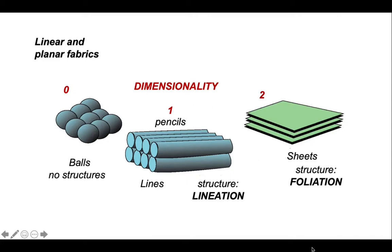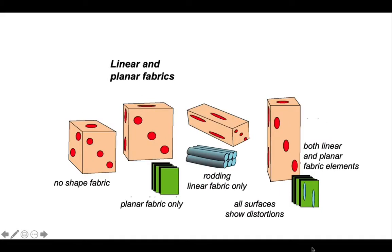So the shapes of grains in rocks can have these three forms. Consider just squashing a die: no shape fabric means every face looks undeformed. If there's a planar fabric only, some faces will look undeformed rather like a deck of cards. In the linear fabric only — this rodding structure — looking at the ends of the rods they look statistically circular still, so don't look deformed; it's looking at the other two faces that the rod shapes are elongate. And in the case on the right, all surfaces will be deformed — the rock will contain both a linear and planar fabric element.